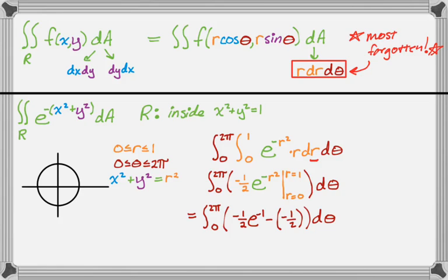So now we have this, and we want to integrate this with respect to theta. At the same time, I'm going to clean it up. So this is just a constant, right? So it's going to be the constant times theta. So it's going to be 1 half minus e to the negative 1 theta, and then from 0 to 2 pi.